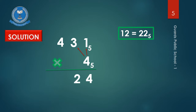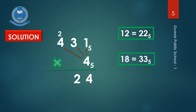Write 2 here and 2 as carry on the top of 4. Again multiply 4 by 4: 4 fours are 16, plus 2 carry gives 18. Again, 18 is not a base 5 digit — we cannot write 18 here. But we must know that 18 is equal to 3, 3 with base 5. So in place of 18, write 3, 3. Remember to write down the base here which is 5. Finally, the answer is 3, 3, 2, 4 with base 5.